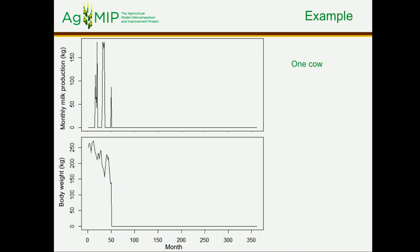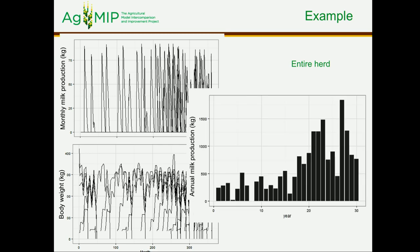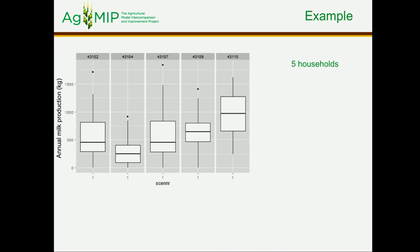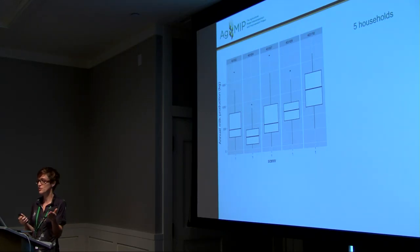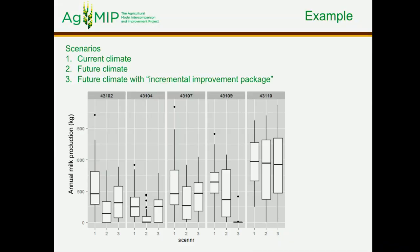Looking at model outputs: monthly milk production and body weight for one cow are shown, then scaled to the entire herd of a farm as annual milk production over 30 years of simulation. Across all households in the database, milk production varies in relation to the number of animals kept and farm sizes. A comparison of three scenarios shows that from current to future climates there is typically a decrease in milk production, but most households manage to produce slightly more milk if they adopt an improvement package.